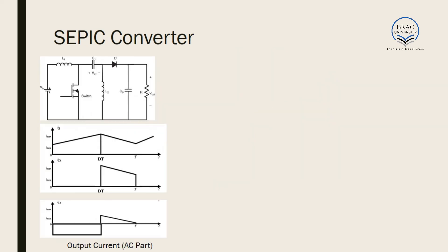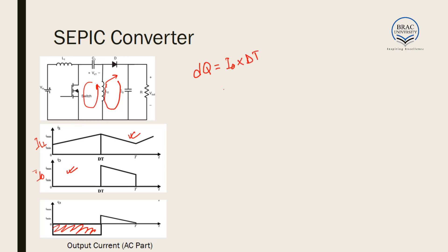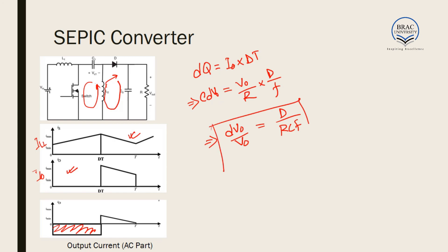For the SEPIC converter, I_output equals the inductor current only when the switch is off; when the switch is on, I_output is zero. So we follow the boost process. The dQ = I_output × DT, giving C·dV_0 = (V_0/R) × (D/F), and therefore dV_0/V_0 = D / (R·C·F). This is the ripple voltage equation for the SEPIC converter.